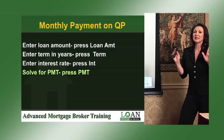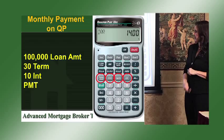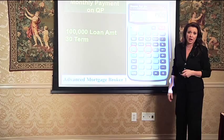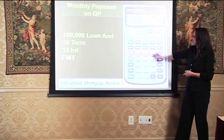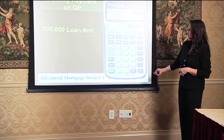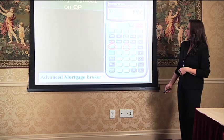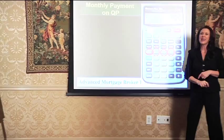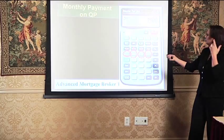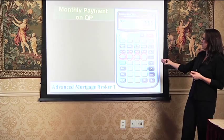So we're going to do that same monthly payment on the Qualifier Plus. We're going to take 100,000 and hit Loan Amount. Then we're going to enter 30 and hit Term — this calculator automatically multiplies by 12 for you. We're going to do 10 and hit Interest, then hit our Payment key. The answer should be 877.57. So remember: Loan Amount, Term, Interest, Payment — four simple steps, and you get your answer. By the way, you can enter these in any order you want, as long as the last button you press is the one you want the answer to.